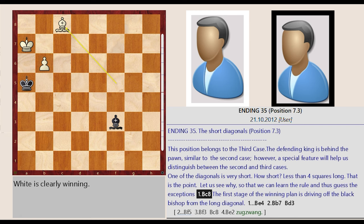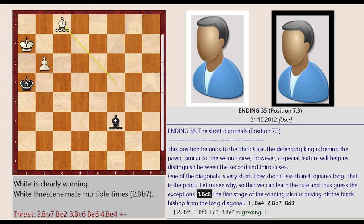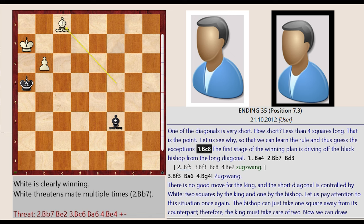Ending 35. The short diagonals, position 7.3. This position belongs to the third case. The defending king is behind the pawn, similar to the second case. However, a special feature will help us distinguish between the second and third cases.